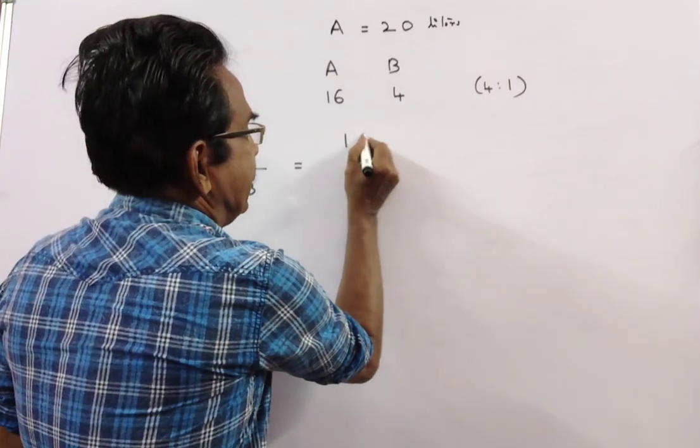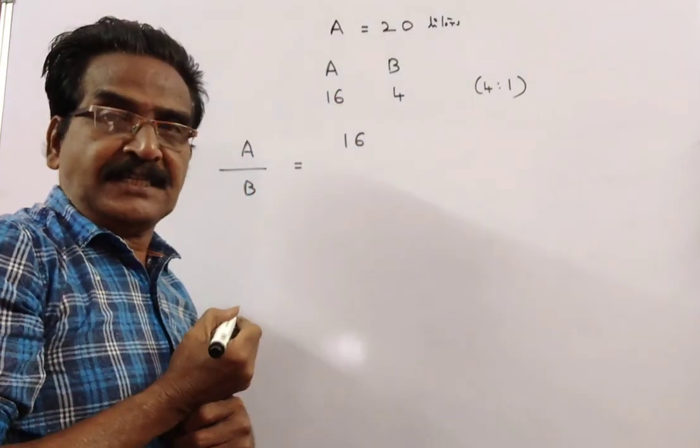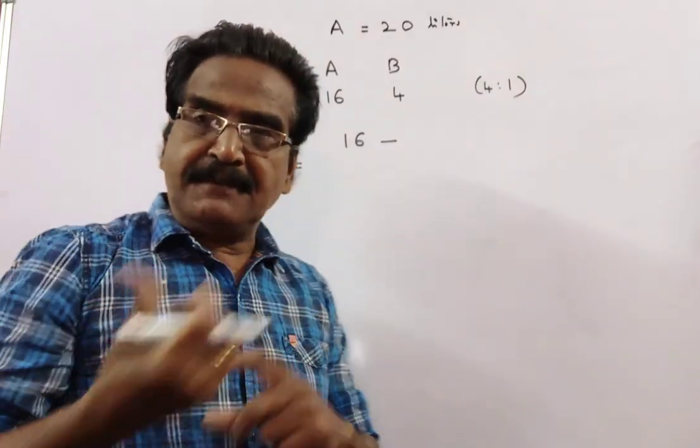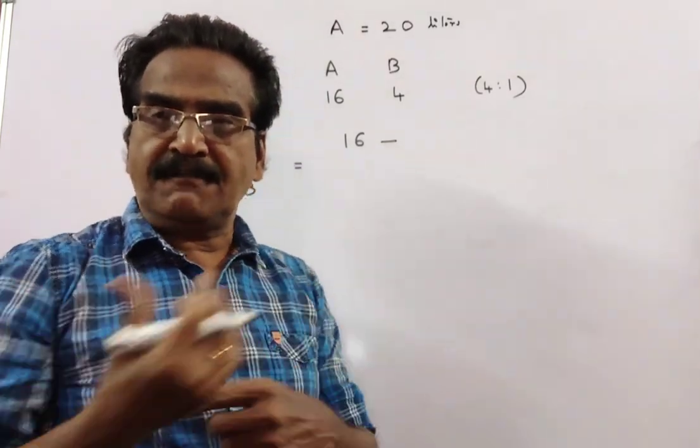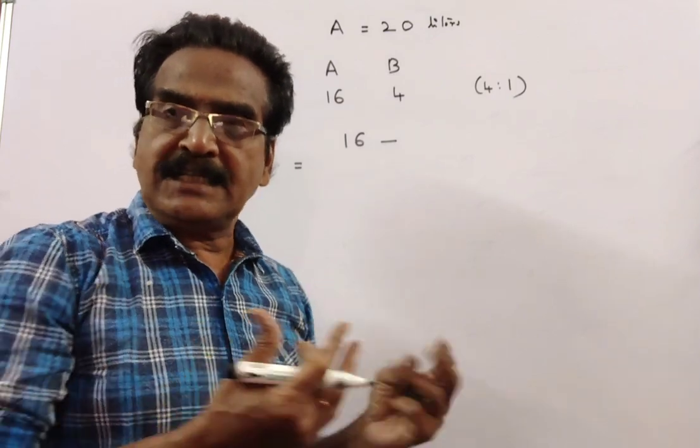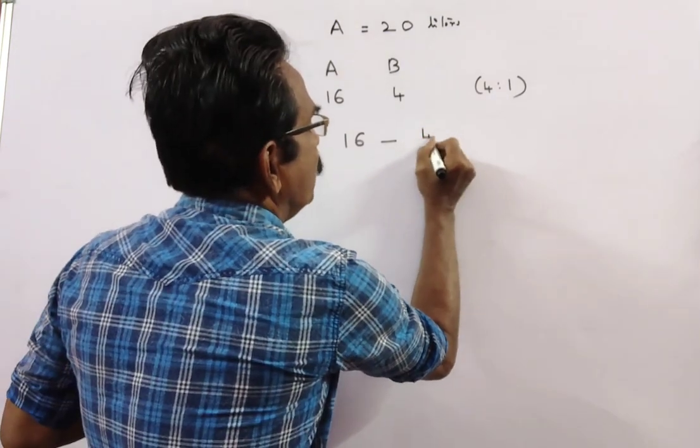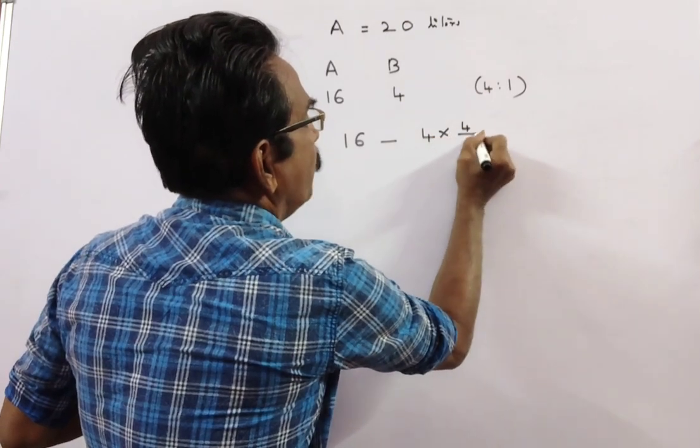Initially 16 liters of liquid A was there. If 4 liters of mixture is taken out, what is the quantity of liquid A drawn? 4 into 4 by 5.